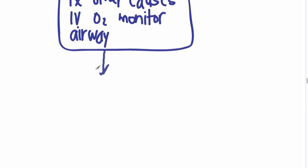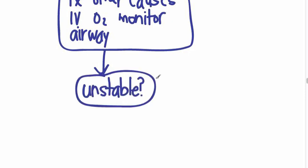And the next distinction you want to make is to decide whether they are unstable or not. Just like with bradycardia, unstable is defined as hypotension or shock, acute heart failure, chest pain, or altered mental status.